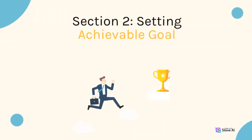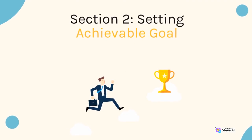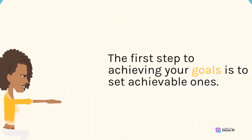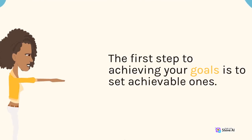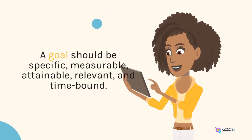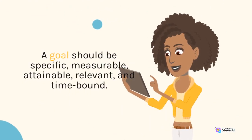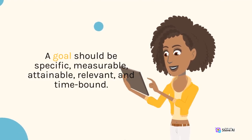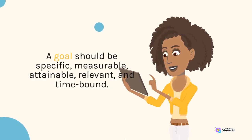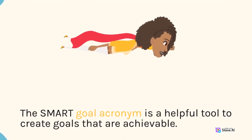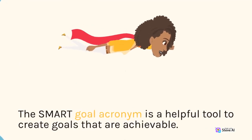Section 2: Setting Achievable Goals. The first step to achieving your goals is to set achievable ones. A goal should be specific, measurable, attainable, relevant, and time-bound. The SMART goal acronym is a helpful tool to create goals that are achievable.